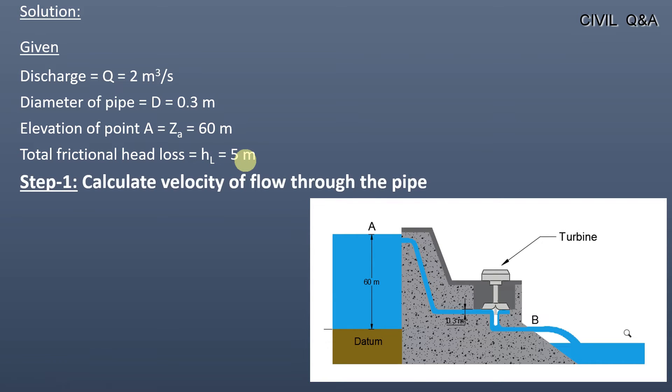In step first we will calculate the velocity of flow through the pipe. As we know, velocity is given as discharge per unit cross sectional area, which equals Q divided by A, equals Q divided by πD² divided by 4.